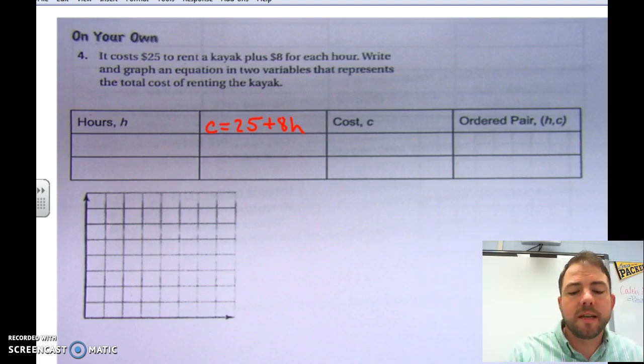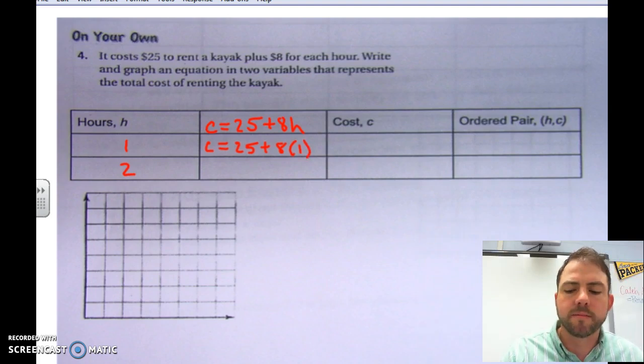Now, let's say we rent the kayak for one hour and two hours. Let's plug those values in for H. So, C equals 25 plus 8 times 1. Because it's one hour this time that we're going to use the kayak for. And we know that that's going to be 25 plus 8. 8 times 1 is 8. So, our cost here is $33.